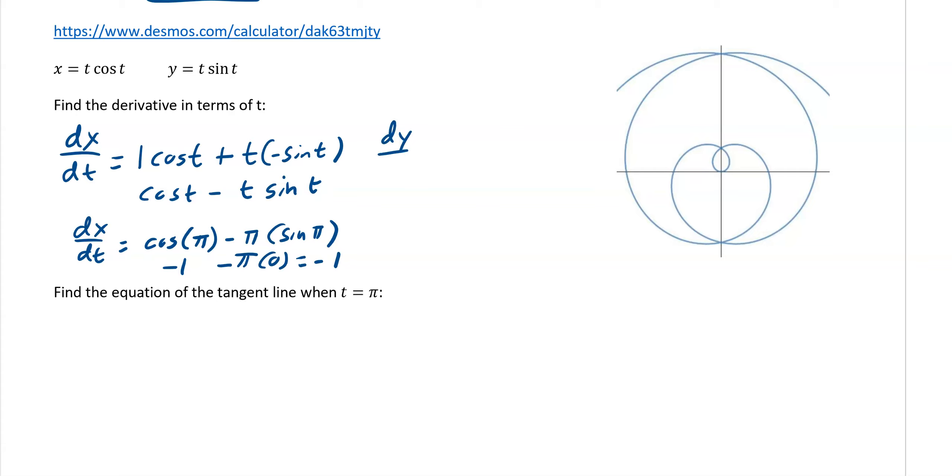Now we need dy/dt. So dy/dt would be, same thing, 1 sine of t, because it's product rule. It's not the exact same thing I just meant. We're doing the same process. And the derivative of sine is cosine t. So now that's already nice. We can just go dy/dt equals sine of π plus π cosine π. And so this would be 0 plus π times negative 1. So we end up with negative π.